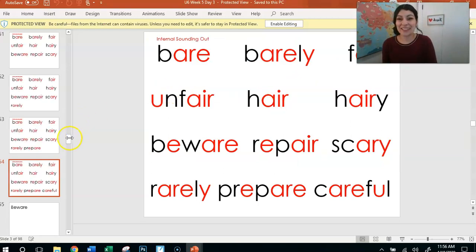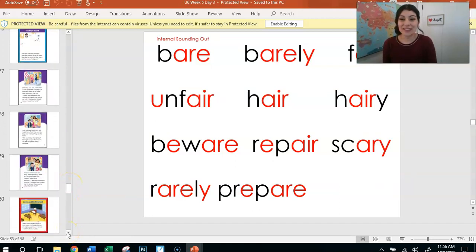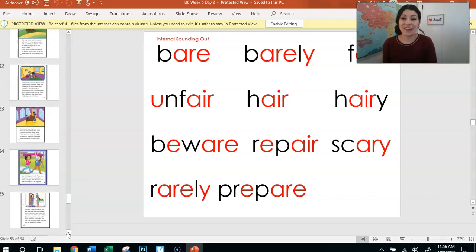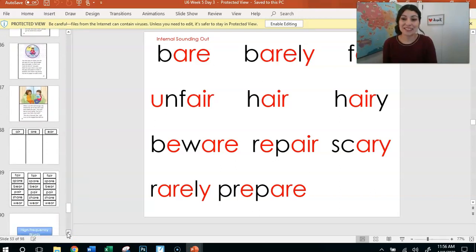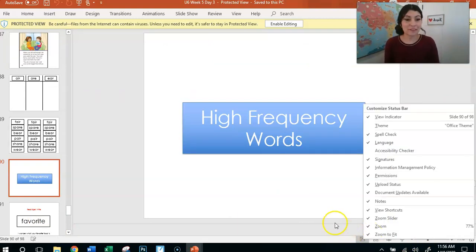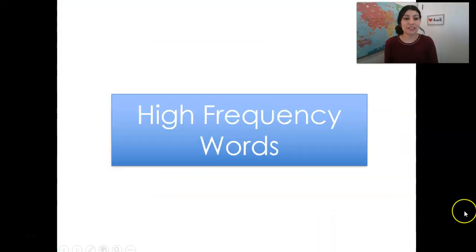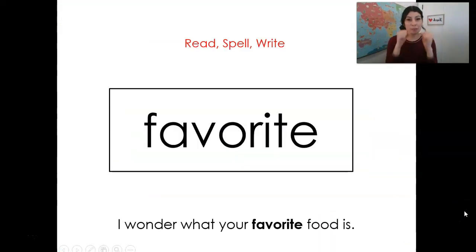All right, now we're going to look at our sight words. Let's go ahead and look at our sight words for this week. Remember, we want to be practicing these, maybe in a flashcard, or any way that's going to help us memorize these very quickly. All right, so let's go ahead and just do these really fast. We're going to do the boxing way. Ready? Let's spell it. Favorite. F-A-V-O-R-I-T-E. Favorite. I wonder what your favorite food is.